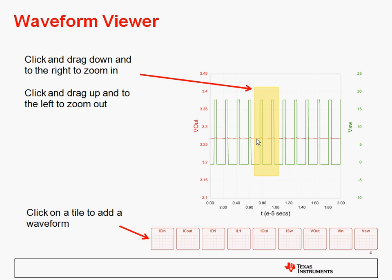As I mentioned before, within the waveform viewer itself, you can click and drag your mouse to zoom in and get details. If you want to zoom out, you click and drag up and to the left. So zooming in is from the upper left to the lower right. Zooming out is the reverse of that. The tiles at the bottom allow you to examine different nodes in the circuit.